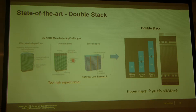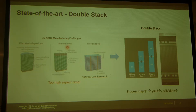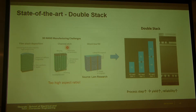And the channel hole — to etch the channel hole is very difficult. Because as I said before, the diameter of the channel hole is around 100 nanometers, and the depth is now 4 micrometers to 6 micrometers. So the aspect ratio is 40 to 60. That is very hard to etch.